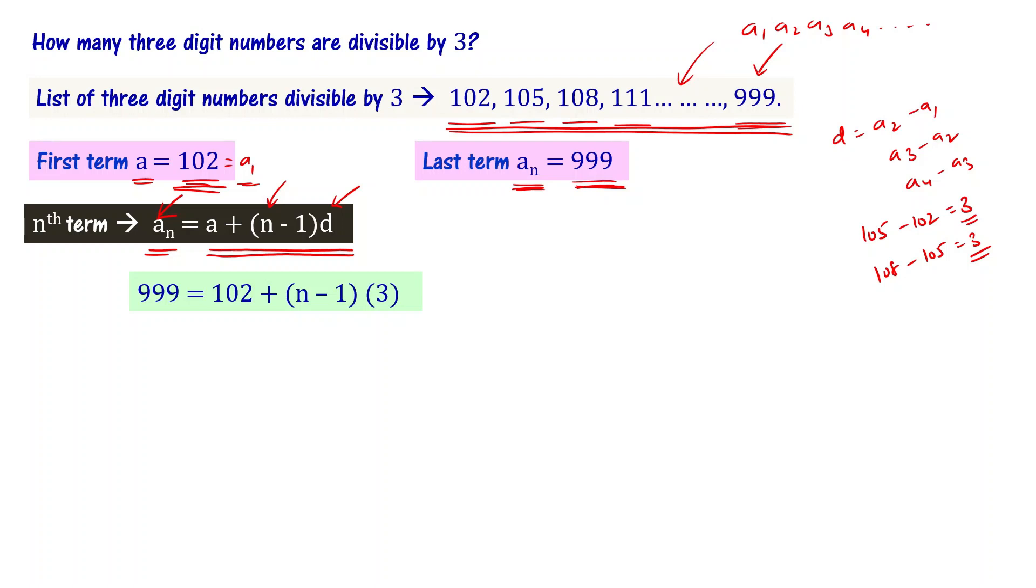That's why it is called common difference and this progression is called arithmetic progression. In the nth term formula, substituting values: aₙ equals 999, a equals 102, and d equals 3. The unknown is only n. Solving this equation gives us the n value.